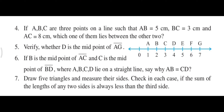Now this is question number 7. Draw 5 triangles and measure their sides. Check in each case if the sum of the length of any two sides is always greater than the third side. We will draw five triangles, measure their sides, and verify this property.